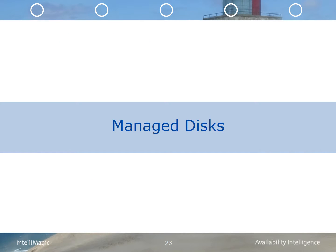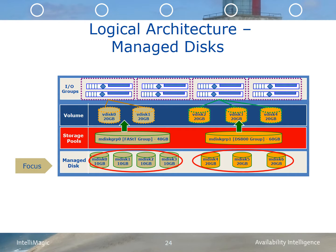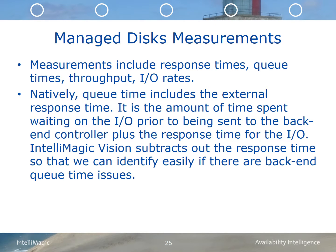In this section, we'll discuss the measurements for the managed disks. As a quick refresh, the managed disks represent LUNs that are externalized from another storage system or possibly internal SVC disks. Managed disk measurements consist of response times, queue times on the SVC, throughput, and I/O rates. Natively, the queue time includes the external response time — the amount of time spent waiting on the I/O prior to being sent to the back-end controller — plus the response time or service time for the I/O operation. IntelliMagic Vision subtracts out the service time so we can identify quickly if there are back-end queueing situations.